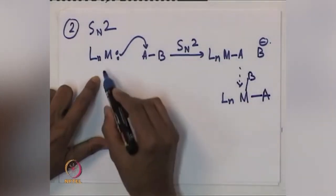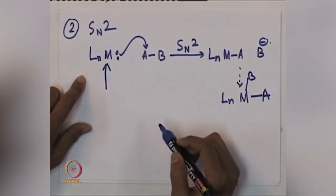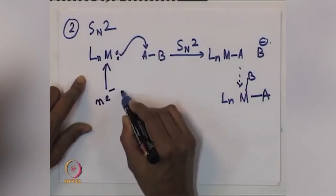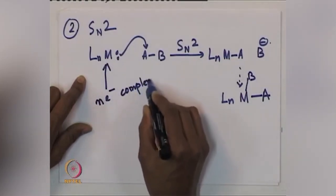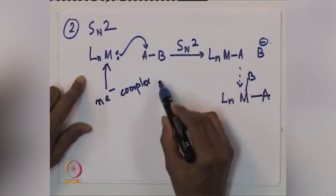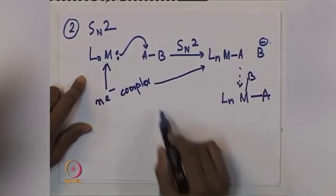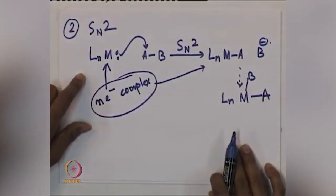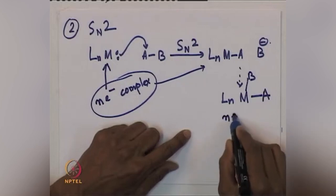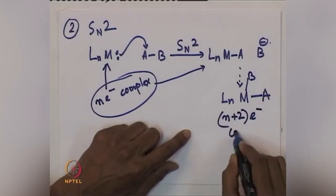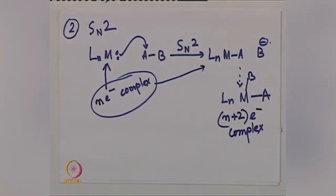This LnM-AB is the oxidative addition complex. If the starting material LnM is an N-electron species, the LnM-A intermediate will also be an N-electron complex. Finally, we get an N+2 electron complex. So upon oxidative addition, the total electron count goes up by 2. If we start with a 16-electron species, upon oxidative addition the complex will have 18-electron count.